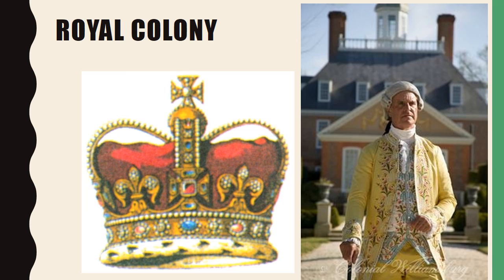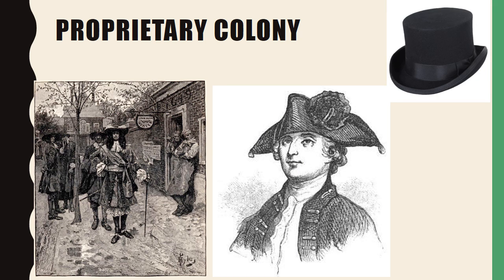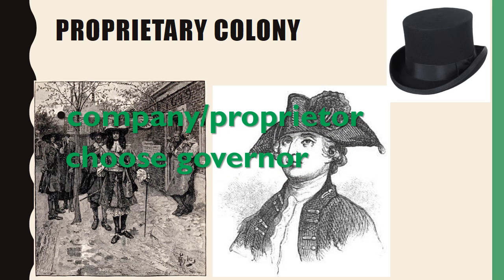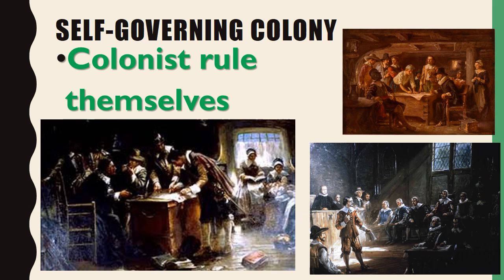Let's move on to the three types of colonies. What was a royal colony? It was a colony where governors were chosen by the king. What was a proprietary colony? This was a colony where a company or a proprietor chose a governor to rule the colony and be a liaison or middleman between the company and the colony. And finally, what type of colony was a self-governing colony? This was a colony where colonists ruled themselves.